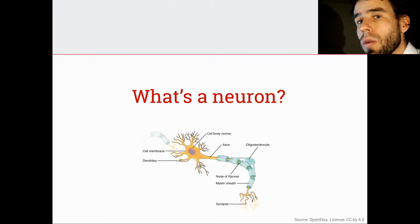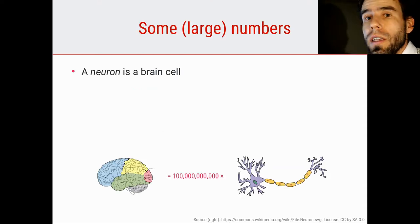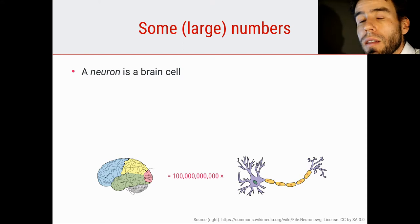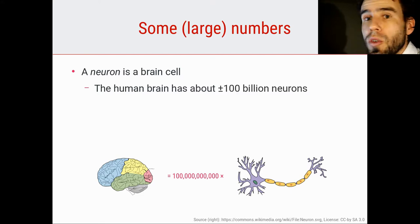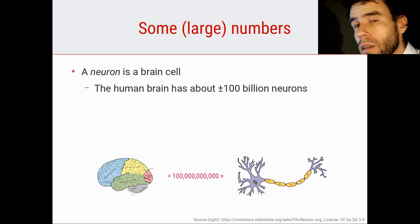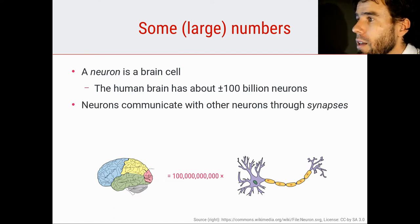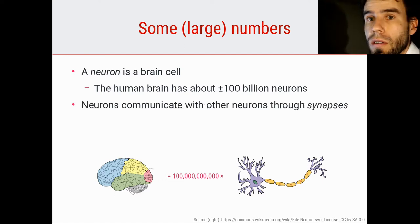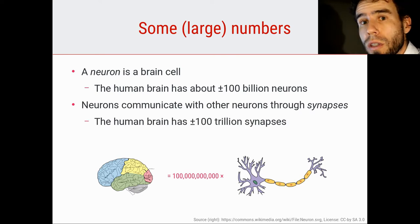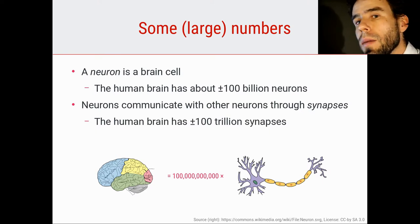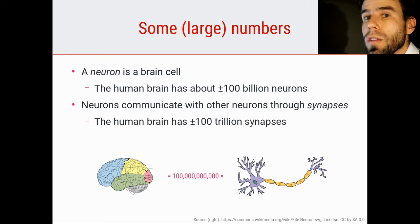Let's start with the very basic question: what is a neuron? A neuron is, as you probably know, a brain cell — a cell that makes up your brain. The human brain has about 100 billion neurons; that's a ballpark figure, so you will find quite varying estimates. Neurons communicate with each other through synapses, which are connections between neurons, and the human brain has about 100 trillion synapses — about 1,000 synapses for every neuron.